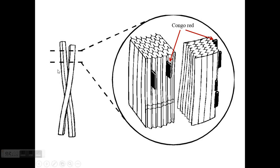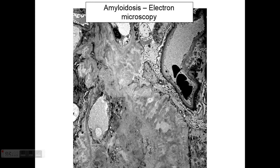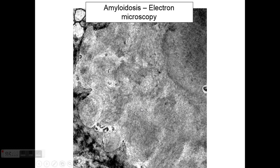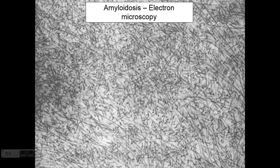How does Congo red work? The Congo red molecules bind to the amyloid fibrils in a specific way such that when you polarize the light, you get that green birefringence. Under electron microscopy, all amyloids look very similar — you have tremendous distortion from deposits of amorphous material made of fibrils. On high power, approximately 80,000 to 100,000 times magnification, you see non-branching, randomly arranged fibrils that are usually 8 to 12 nanometers in diameter.